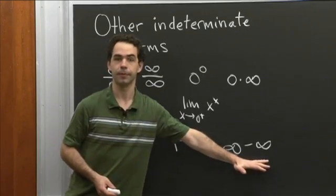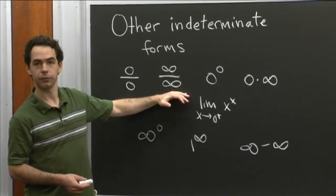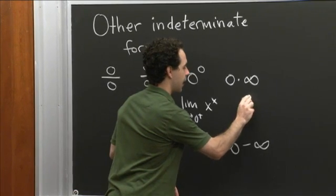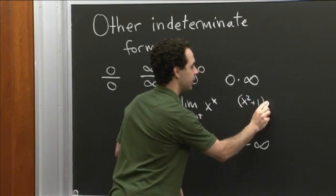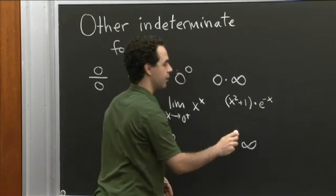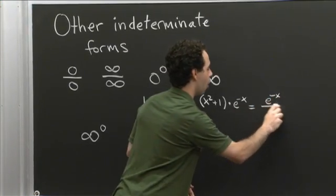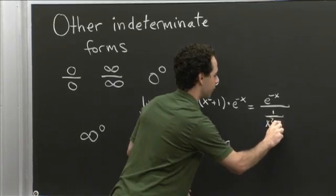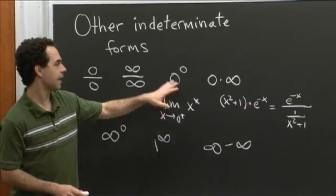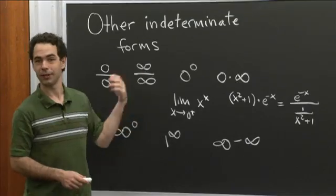So that's also an indeterminate form. These are the seven indeterminate forms. When you have a quotient, you can always apply L'Hôpital's rule. When you have a product, you can always rewrite it as a quotient — for example, x squared plus 1 times e to the minus x is a product, and you could rewrite it as e to the minus x over 1 over (x squared plus 1). There might even be a smarter way to rewrite the product as a quotient. When you have an exponential form, you can use the rewriting-in-base-e trick to turn it into a product, which you can then turn into a quotient.